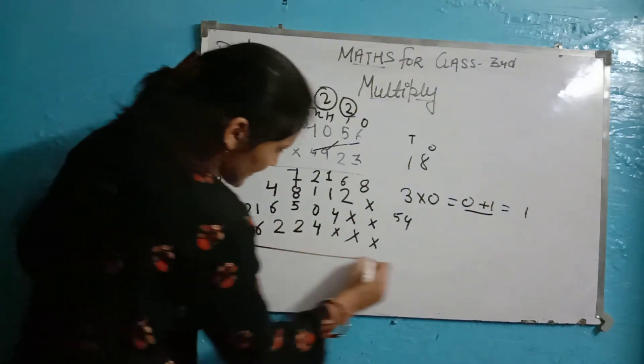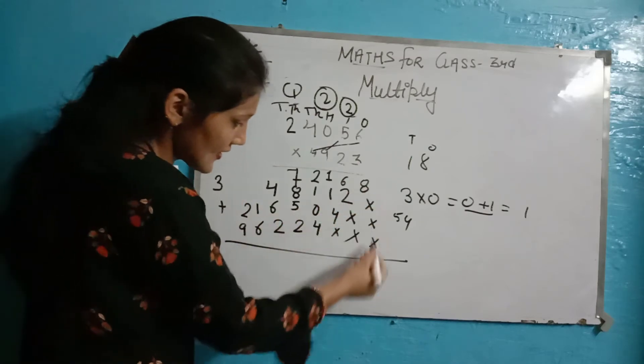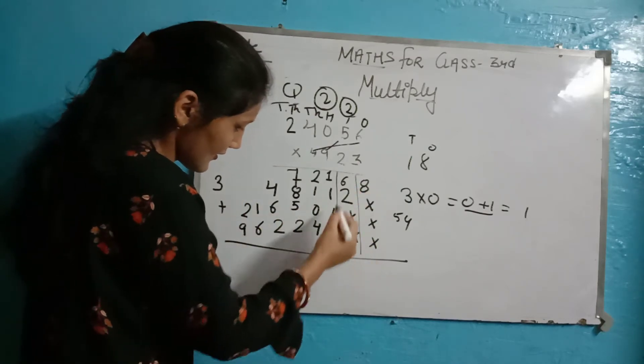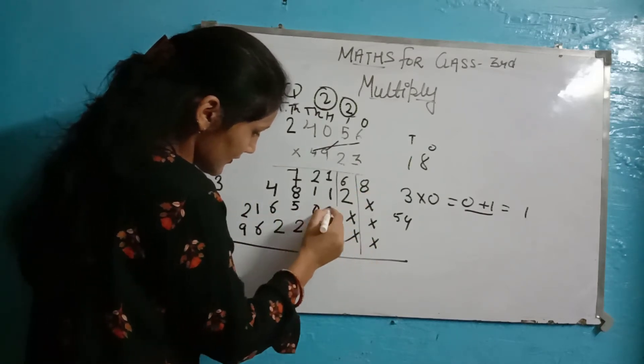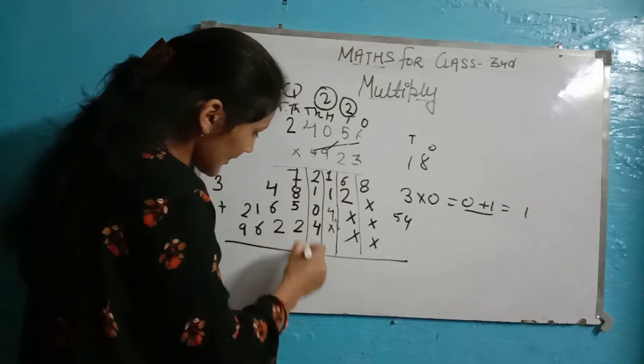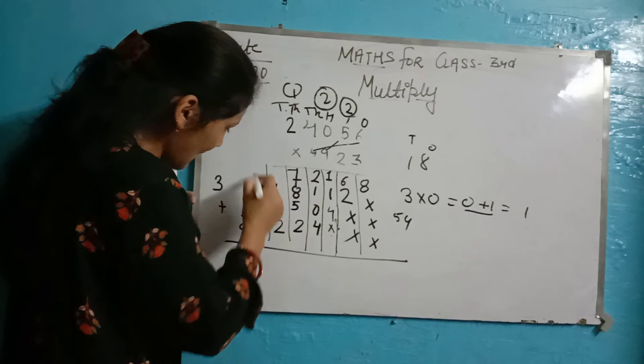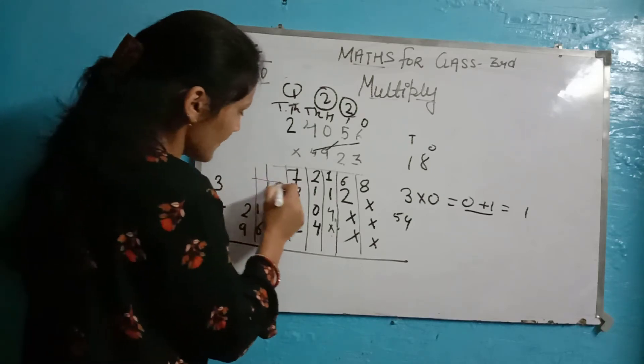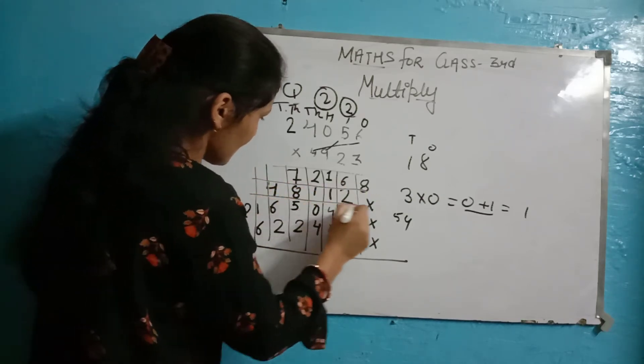All these lines are in the same way. Alright? This will add very easily. If you write it, it will be very easy.